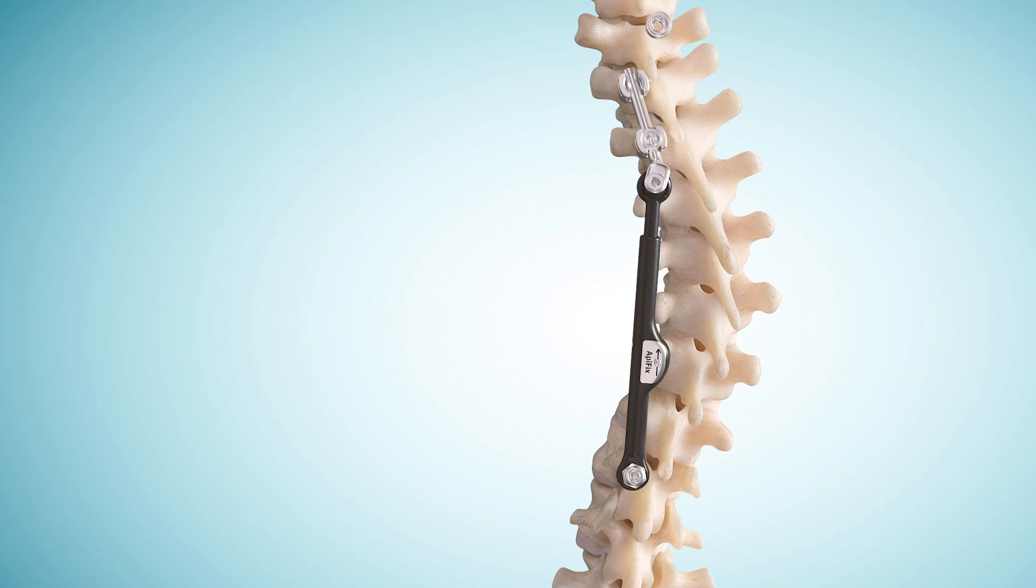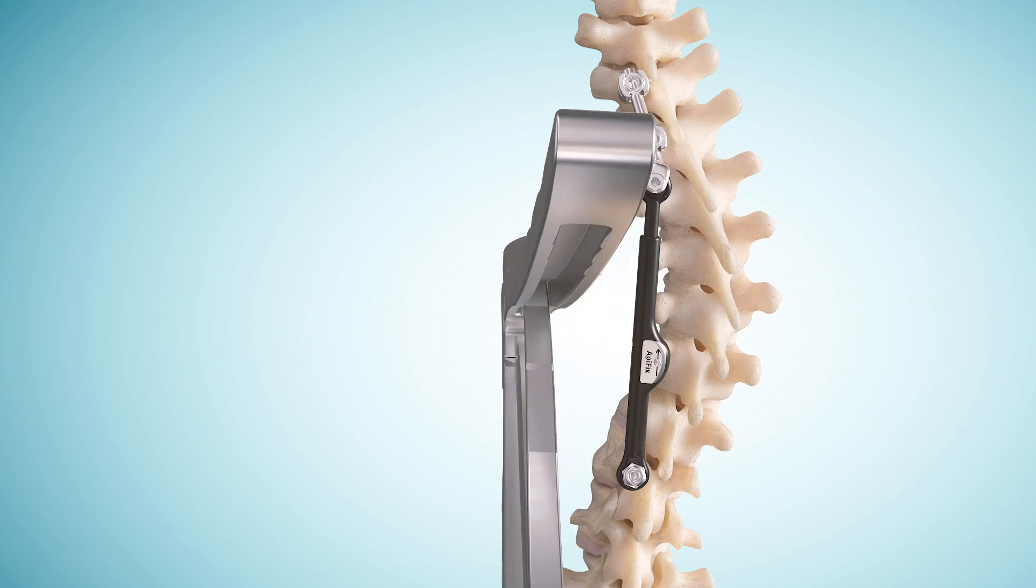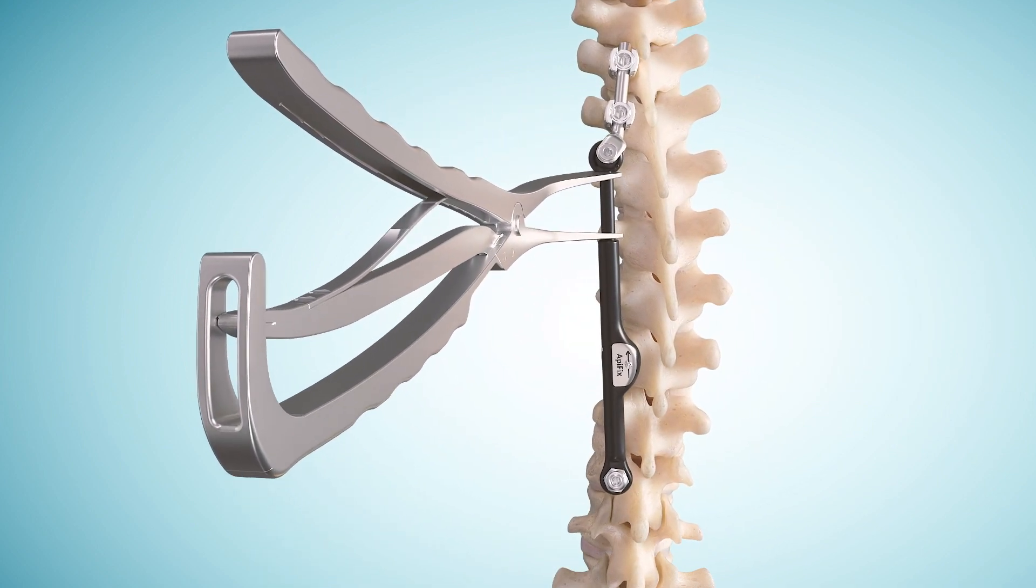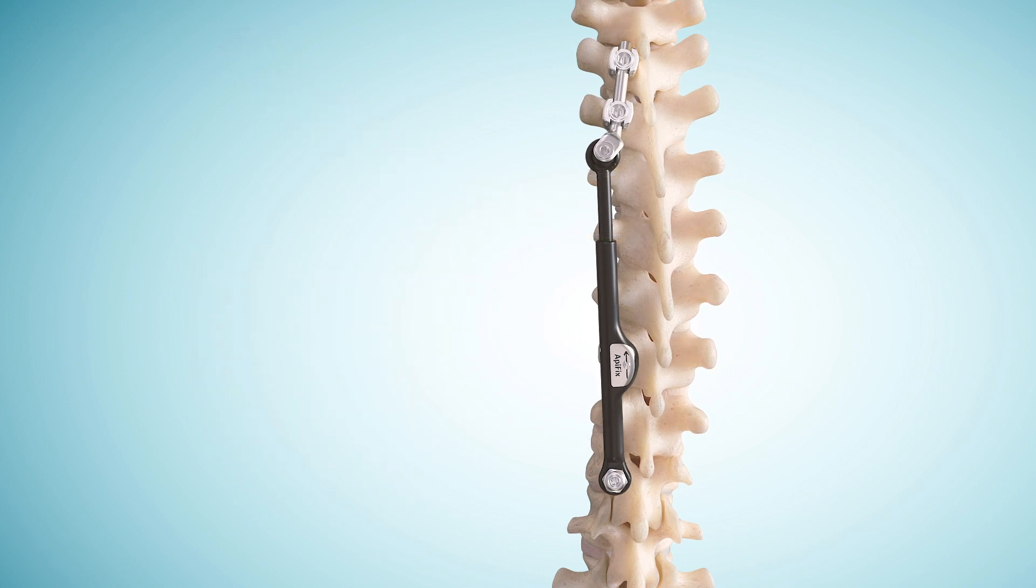A distractor is introduced to elongate the rod and achieve curve correction. The unidirectional rod passively allows for additional elongation post-operatively to accommodate for growth or additional curve correction over time.